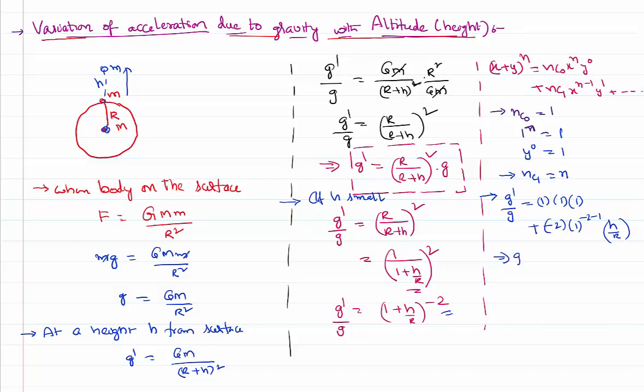That implies g dash by g is the first term which is 1 into 1 into 1, that is 1, this is minus 2, 1 power anything is 1, h by R. That implies g dash equals 1 minus 2h by R multiplied by g.